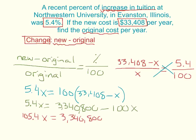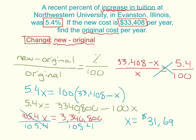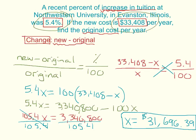Then divide both sides by 105.4. You should get that x equals $31,696.39. What this means is we just found the original amount — this is what the tuition was at Northwestern. After a 5.4% increase, it became $33,408 per year. So there's your lesson on percent of change and using proportions to solve problems. Good luck with the lesson!